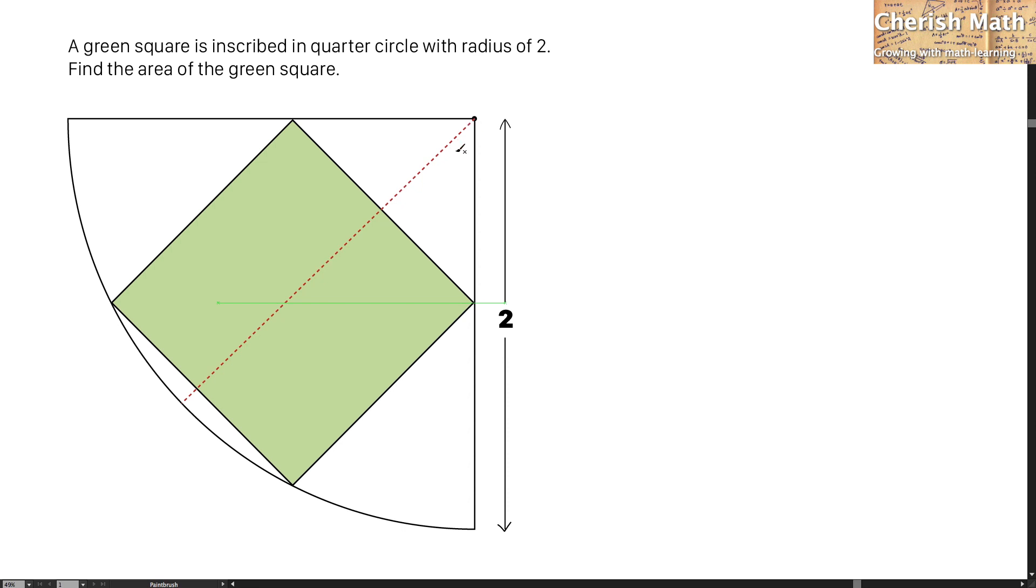Since this line is the bisector, for this part it's going to be 90 degrees, while here it's going to be 45 degrees, and this is 45 degrees as well.